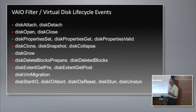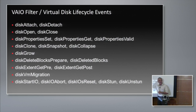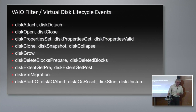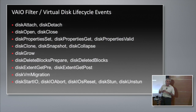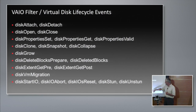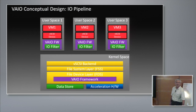VM migration is about vMotion. There's also bus reset and command abort. All reads and writes come through as a single disk IO call. Disk stun and unstun: sometimes VMware asks us not to send any IO to the virtual disk for internal reasons, but we may need to start IO for flushing. So you can see how complicated VIO is.